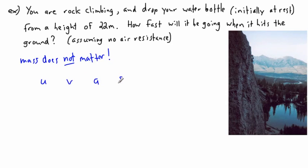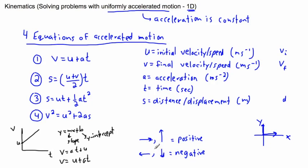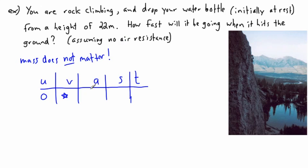We consider: initial speed (u), final speed (v), acceleration (a), displacement (s), and time (t) — UVAST. My water bottle is initially at rest, so the initial speed u is zero. V is the final speed — that's what I'm asking for, so I'll put a star there. The acceleration is really important: things moving down are negative, so acceleration due to gravity on Earth is negative 9.81 meters per second squared.